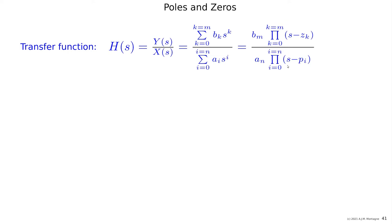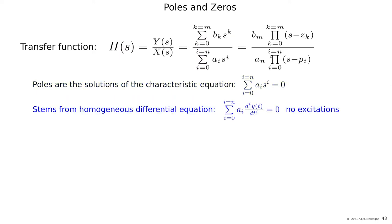Pi is a pole and zk is a zero. These are the solutions of the numerator and the denominator. Basically, the poles are the solution of this equation which is called the characteristic equation of the system, and the zeros are the other one.